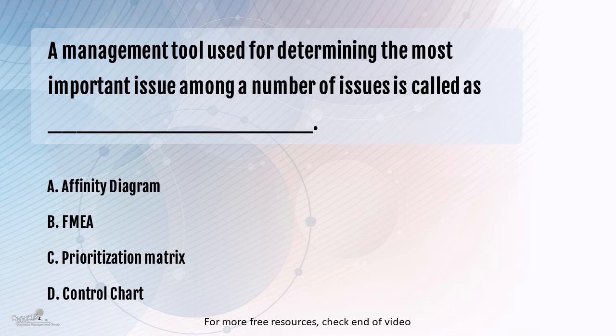Affinity Diagram — what is it used for? It is used for grouping things or themes together. It could be customer feedback, employee feedback, or any qualitative information you gather. You're trying to group or affinitize them based on something that is logical, something that's common. That is when an Affinity Diagram is used.